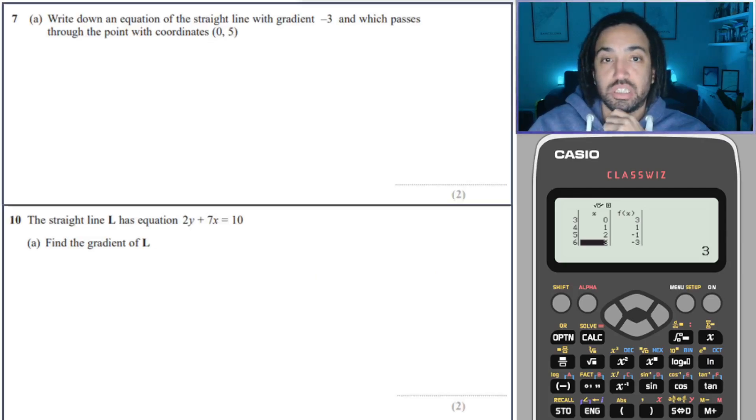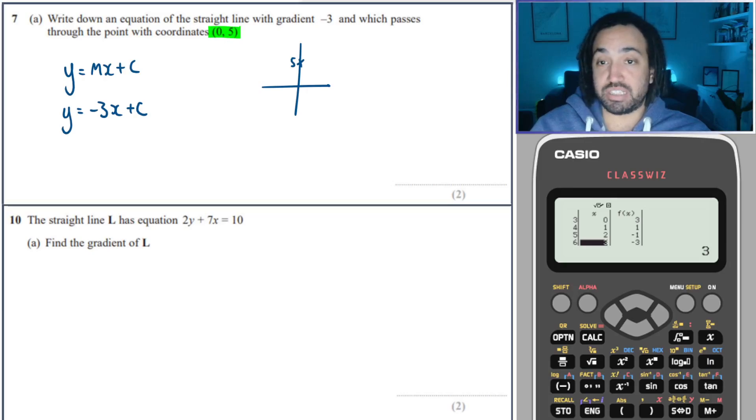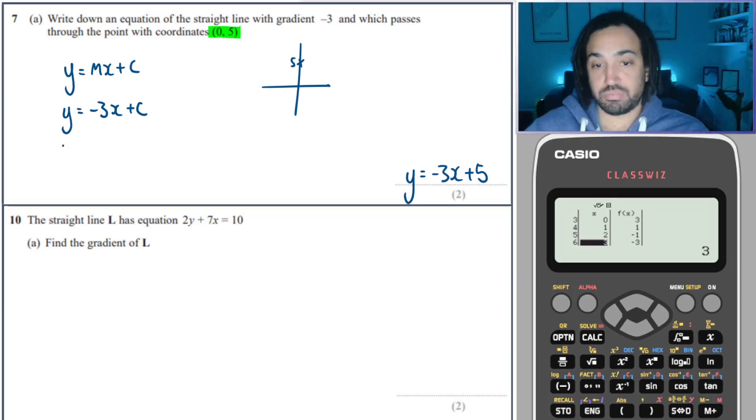Okay, next question asks us to write down the equation of a straight line with gradient 3 which passes through that point. Okay, well I know that y equals mx plus c. That's the equation of a straight line. I know that m is the gradient, so that's minus 3. And I also know that c is the y-intercept. So that is the value of the y when x is 0. And that is perfect. It tells me exactly where the y is when x is 0. So it tells what the y-intercept is 5. So therefore, we have everything we need to know, which is y is minus 3x plus 5. Perfect.